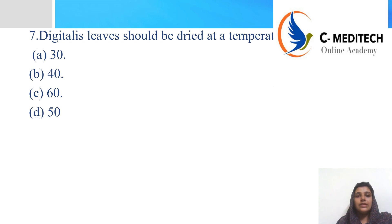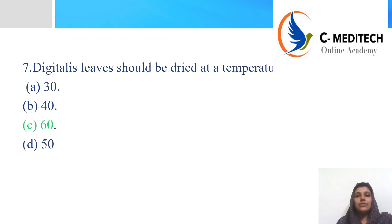Seventh question: digitalis leaves should be dried at a temperature below which value? Options are 30°C, 40°C, 60°C, and 50°C. Digitalis leaves are obtained from the leaves of Digitalis purpurea and Digitalis lanata, belonging to the family Scrophulariaceae. The drying temperature is important — it should be dried at a temperature below 60°C.